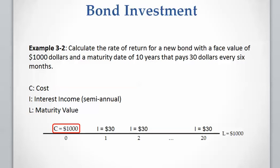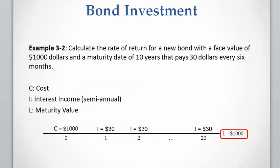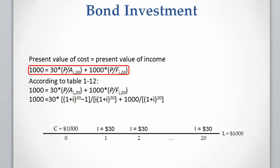We are going to have a $1,000 investment at the present time, and we are going to receive $30 every six months, which will be 20 payments of $30. And at the end we are going to receive the $1,000 face value of the bond. We are going to calculate the return on this project.